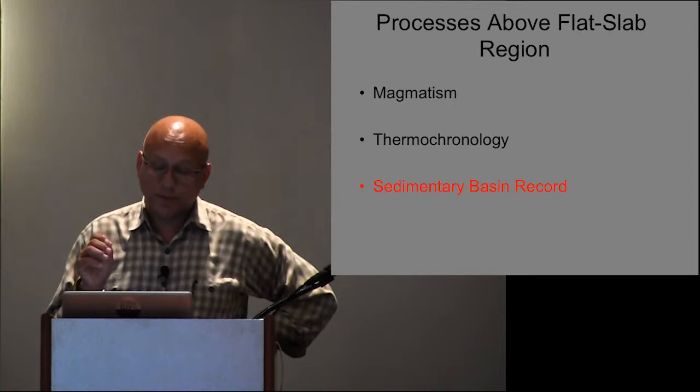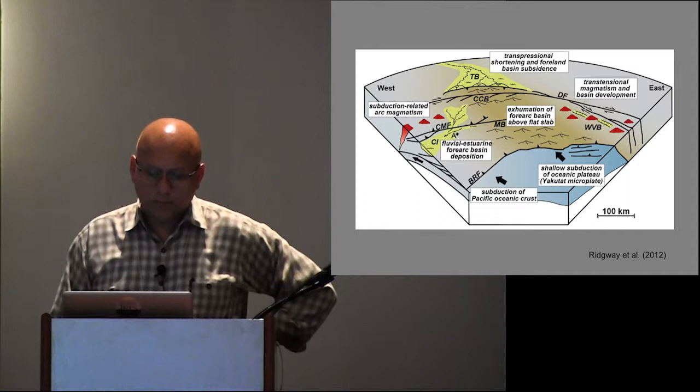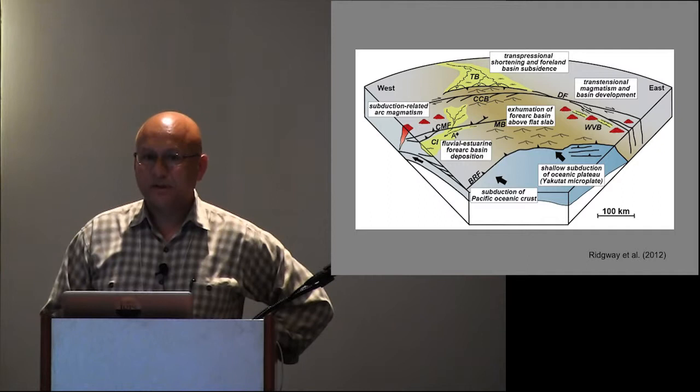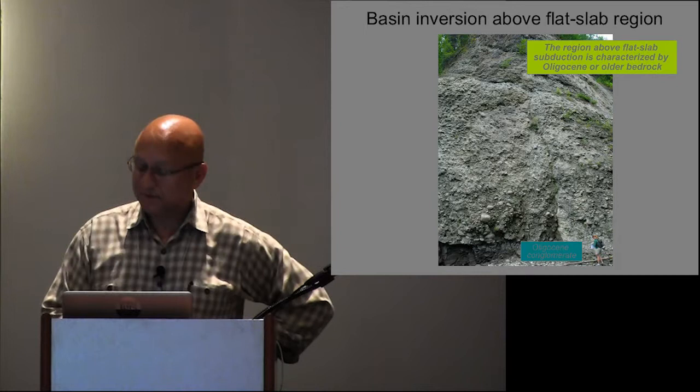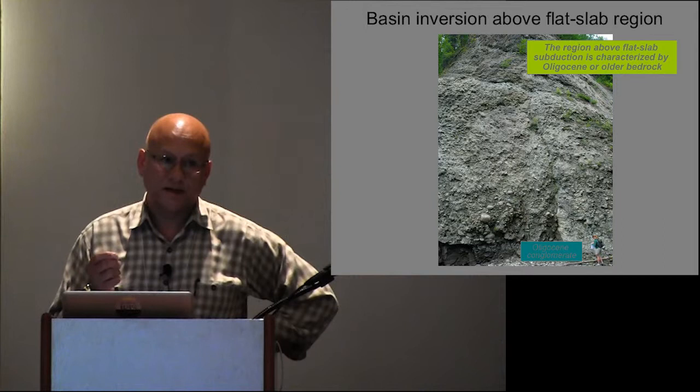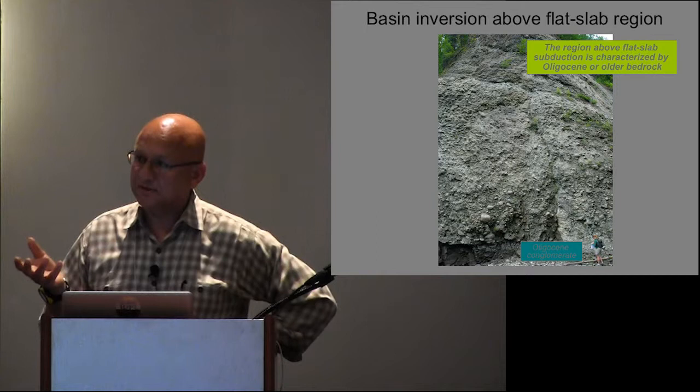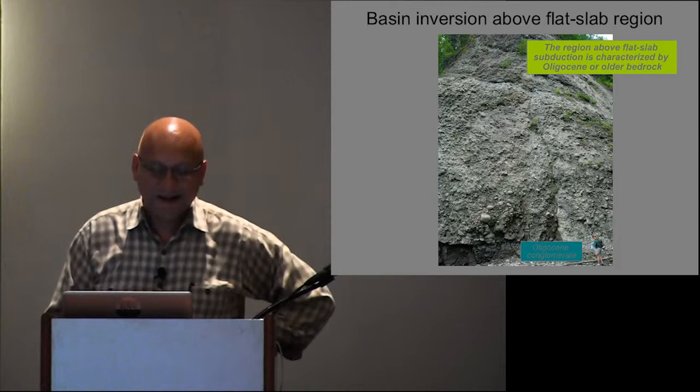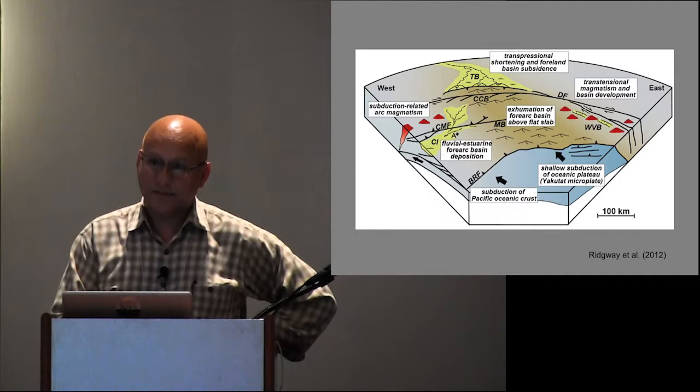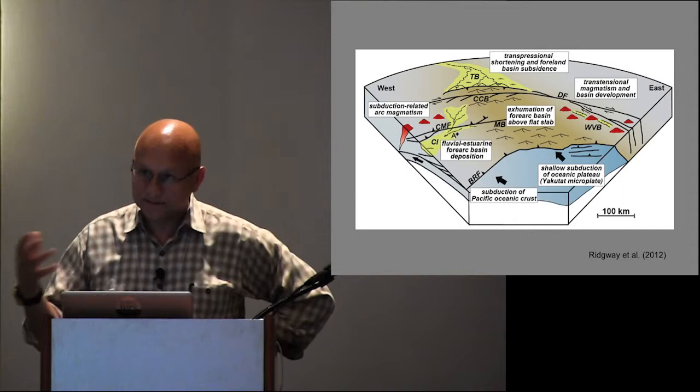Now I want to look at the sedimentary basin record above the flat slab region. What's remarkable about this area is that the entire forearc basin has been exhumed here in what we call the Matanuska Valley. There's been a number of basins that have been exhumed, and the youngest rocks are Oligocene here. You can see Emily for scale. These rocks, we've been mapping them the last two years, are deformed into a fold and thrust belt. So there's been no deposition above this area of flat slab subduction since the Oligocene. That's like 30 to 20 million years for you guys that aren't geologists. The important message here for the area above the flat slab: lack of magmatism since 30 million, exhumation beginning at 25 million in several areas, and these basins being inverted.